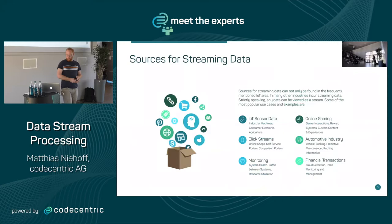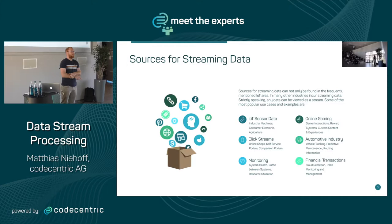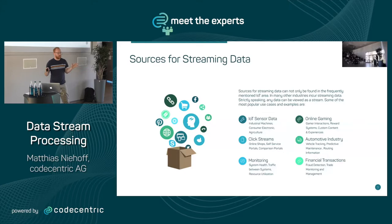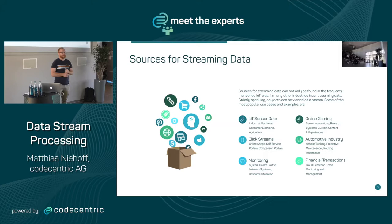But why is streaming such a big thing right now? Because there are a lot of sources for streaming data. The first thing that comes to mind is IoT — all the sensor devices which send a lot of data, maybe multiple times a second or multiple times a minute. In an industrial complex, if every machine has some sensor, a huge amount of data arises. But it's not only IoT — it's also advertising or clickstream analysis.